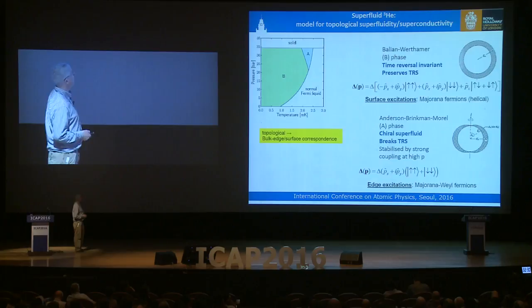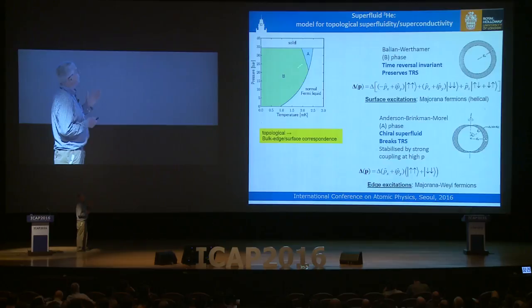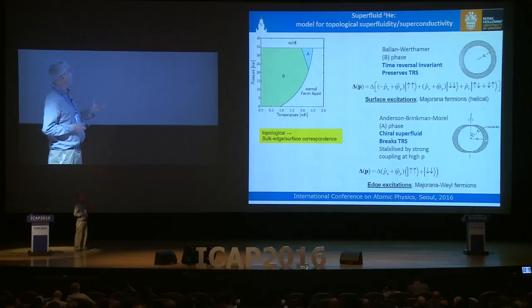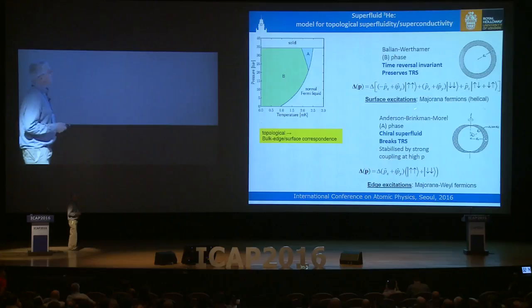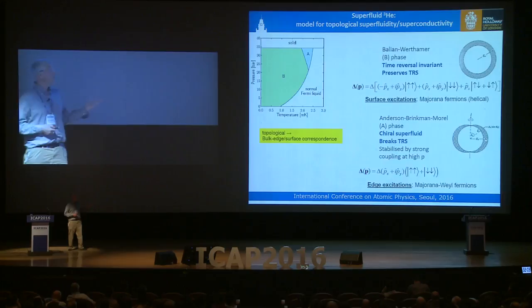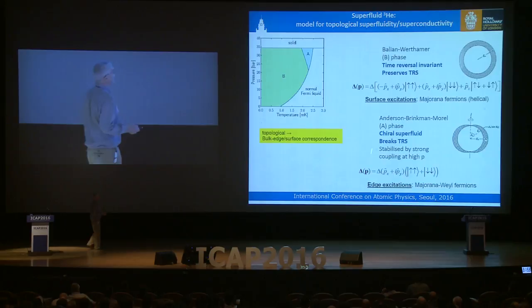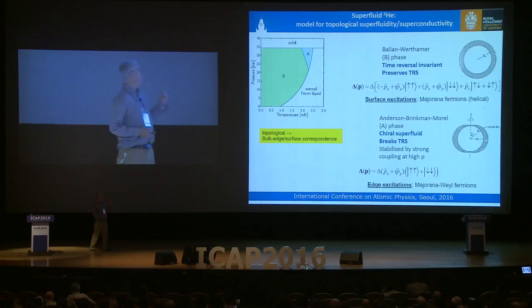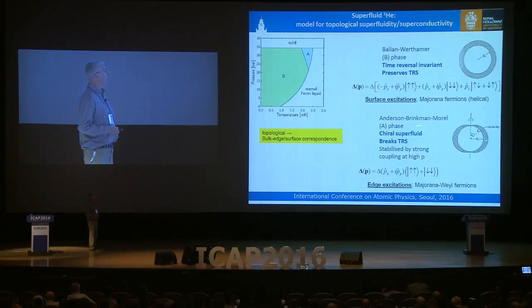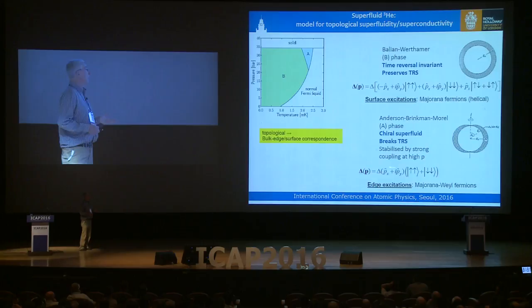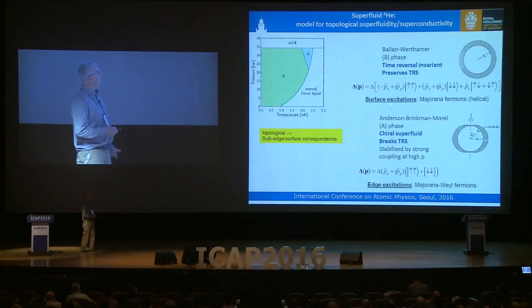The interest of this is that superfluid helium-3 is a topological superfluid and can act as a model for topological superconductivity. These two phases are completely different in character. The B phase has an isotropic gap; it's P-wave paired, and its order parameter preserves time-reversal symmetry. Through bulk-edge correspondence — the characteristic fingerprint of topological quantum matter — the surface excitations of the B phase are Majorana fermions that are helical, meaning the spin is locked to the momentum. The A phase, or ABM phase, has all pairs with the same orientation of angular momentum, so the gap has a node, the phase is chiral, and it breaks time-reversal symmetry, giving Majorana Weyl fermions as edge excitations.